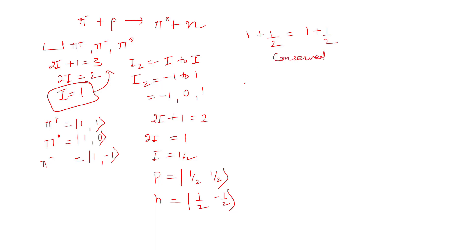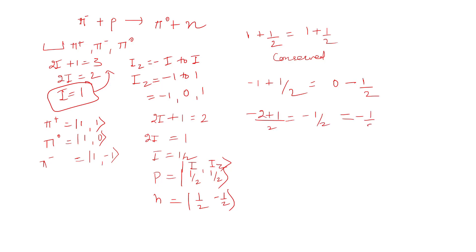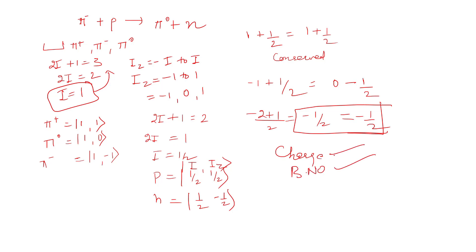Now checking the z-component of isospin: for pi minus, I_z is minus 1, and for the proton, I_z is plus 1/2, giving minus 1/2 on the left. On the right, for pi zero I_z is 0 and for the neutron I_z is minus 1/2, also giving minus 1/2. So I_z is conserved. Charge, baryon number, isospin, and I_z are all conserved.